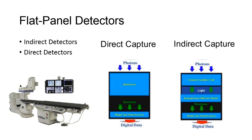Image intensifier tubes are being replaced by flat panel digital detectors capable of recording live images. There are two types of flat panel detectors available today. Indirect detectors utilize a cesium iodide phosphor coupled to an active matrix array of amorphous silicon thin film transistors. This requires an additional conversion of energy compared to the direct detector, which uses amorphous selenium thin film transistors.